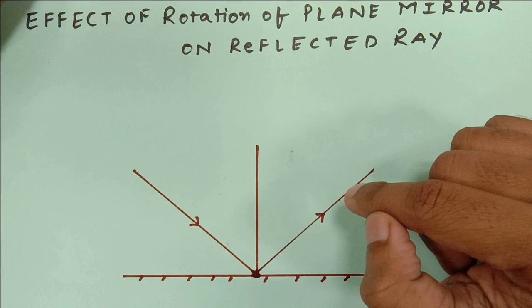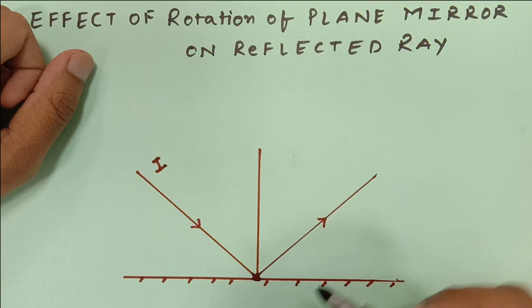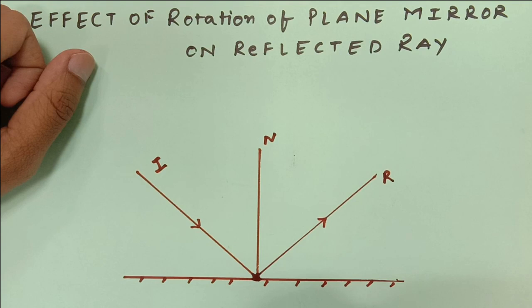Here is the situation in front of you. This is the incident ray — I'm going to call it 'I'. This is my normal.